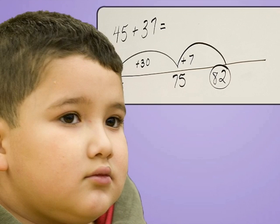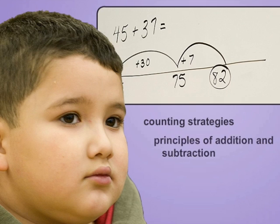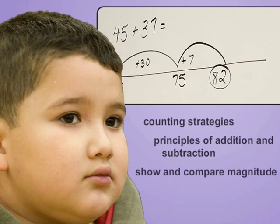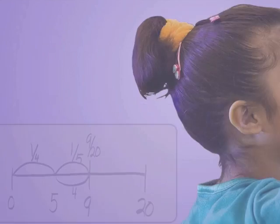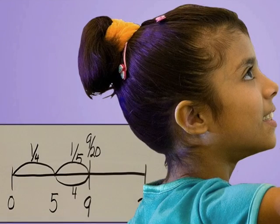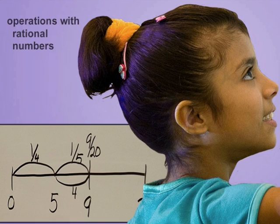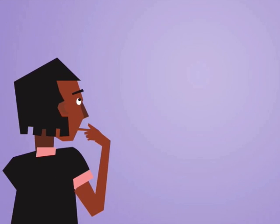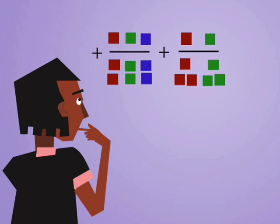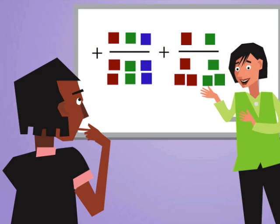Number lines are especially powerful visual representations and can be used with younger students to demonstrate counting strategies, teach principles of addition and subtraction, and show and compare magnitude. Older students can use both open and double number lines to perform operations with rational numbers. For students to get the most benefit from visual and concrete representations, they need systematic and consistent exposure to examples.